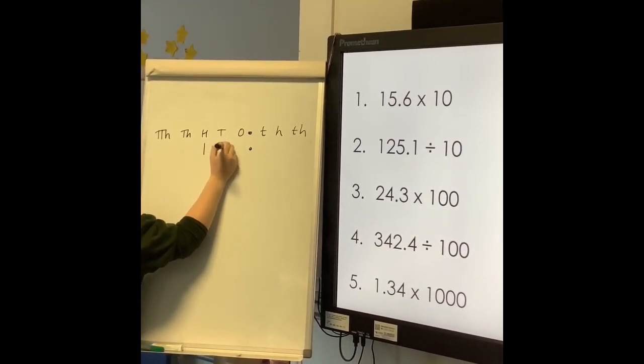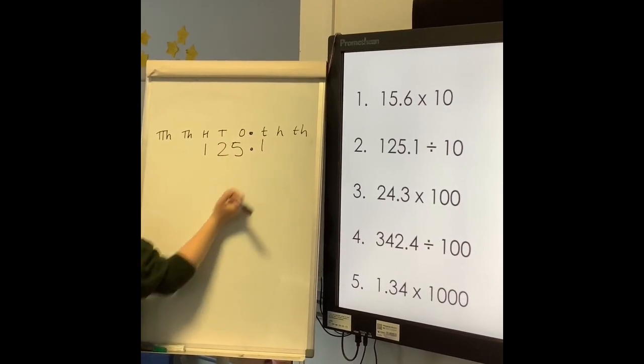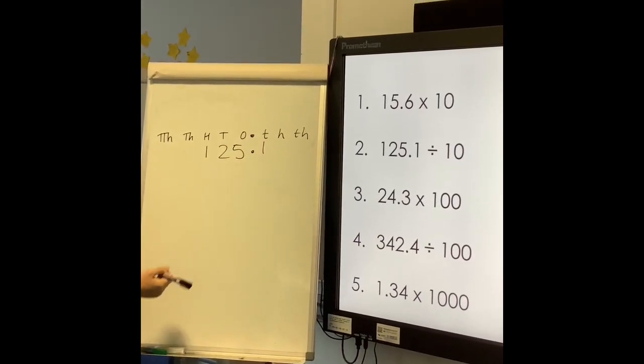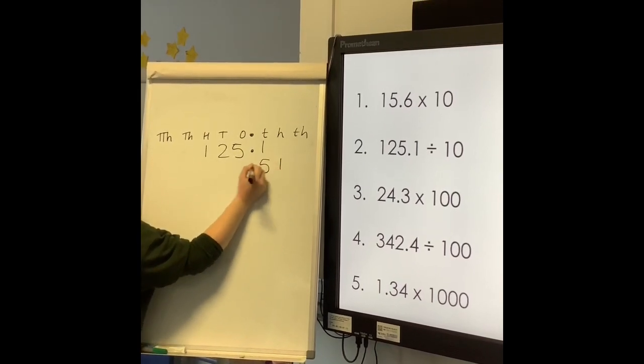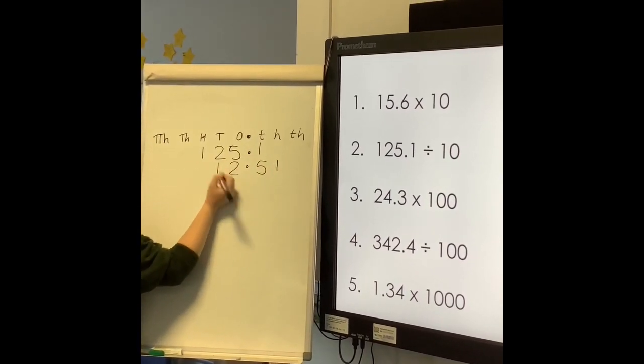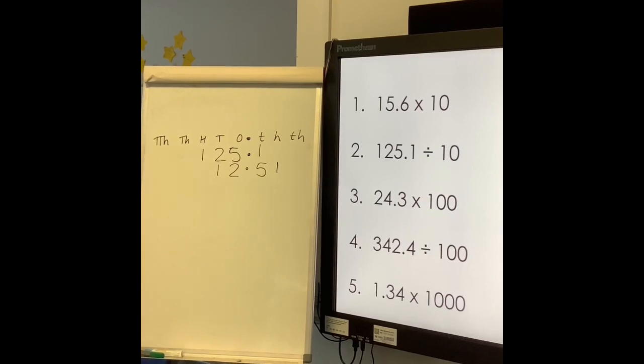Second one: 125.1, and this time we are dividing by 10, so we are moving down one place value column for each digit. Well done to those of you that spotted it was divide and not times.